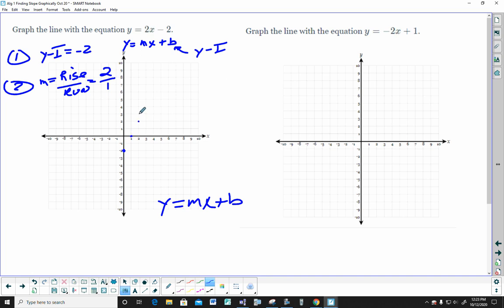Rise 2, run 1. Now, in delta math, it'll only let you put one second point. It doesn't let you do all of these. I'm just doing it to illustrate the point.